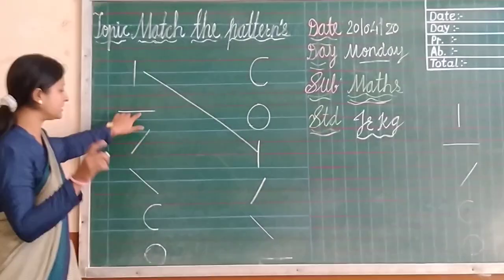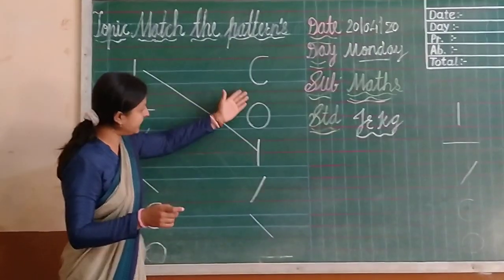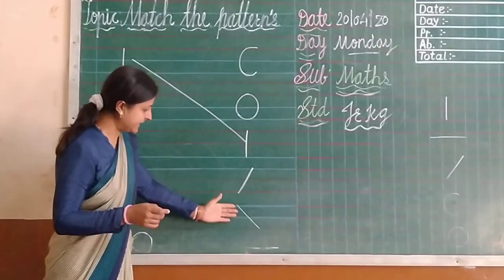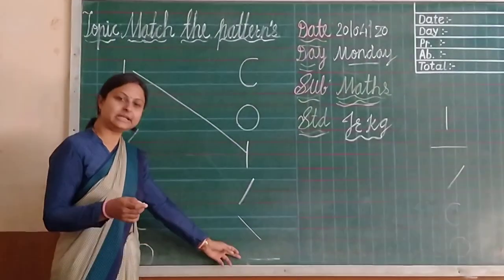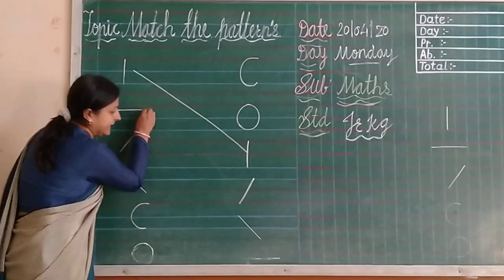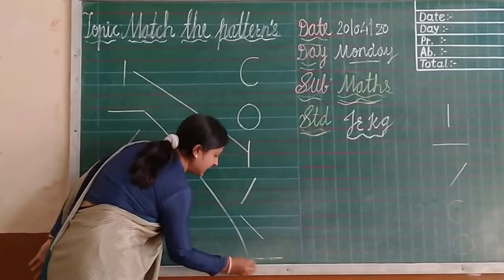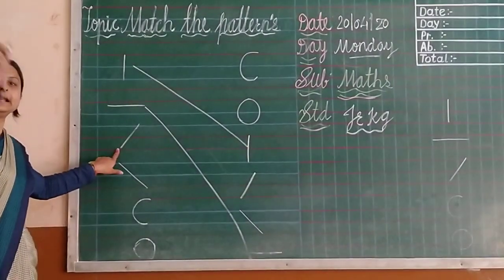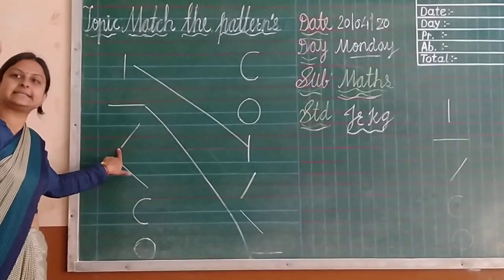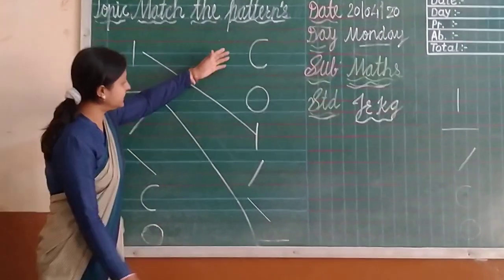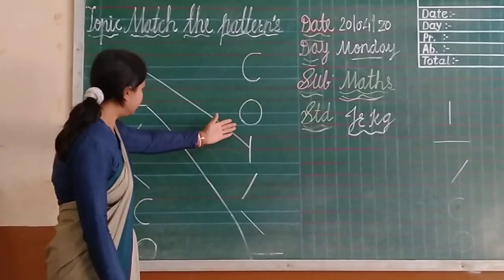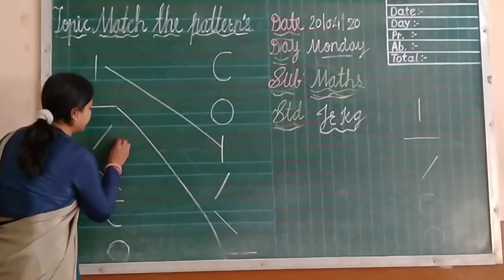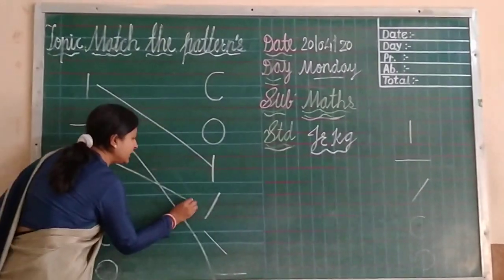So in this row, where is slipping line? This one is slipping line. Yes. And this is slipping line. So let's match it — what pattern is it? Slipping line. This one is slipping line. Now which pattern is this? Slipping line. Yes. In this row, where is slant line? This one — yes, this is slant line. So match it.